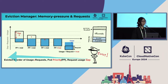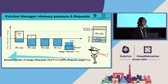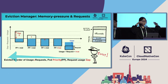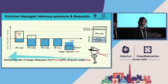Next, let's look at the relationship between resource requests and pod eviction during node pressure. Once OOM happens, the workload is affected and recovery becomes difficult, so we want to avoid OOM as much as possible. Kubelet provides a feature to make resources available through eviction — when memory usage exceeds the eviction threshold, kubelet evicts pods to make node resources reusable.